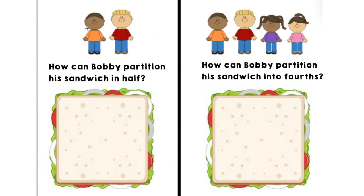Let's try a new scenario. One day Bobby had a sandwich and he wanted to share that sandwich with his best friend. He knew he wanted each of them to receive an equal part of the sandwich, and since it's two of them, he knew he needed two equal parts. What is that called when you cut something into two equal parts? That's right, it's called a half. So Bobby knew that he wanted one half of the sandwich and he wanted his friend to have one half of the sandwich. How can Bobby partition his sandwich in half?